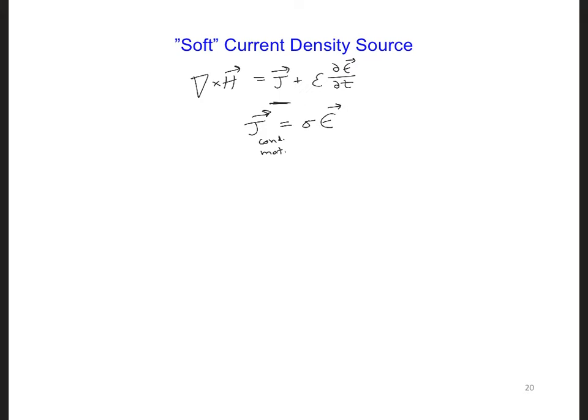Now we want to model a J current density at the location of our source to represent current flowing along a simple antenna like a dipole. Here we again have moving electrons, but instead of modeling electrons in a conductive material that are reacting to the presence of electric fields...